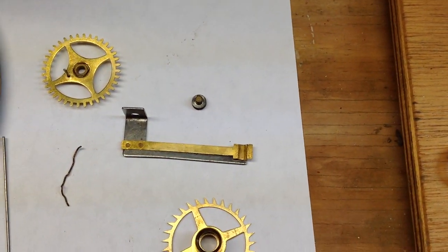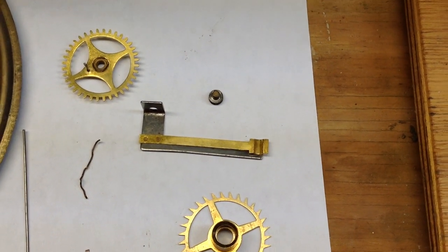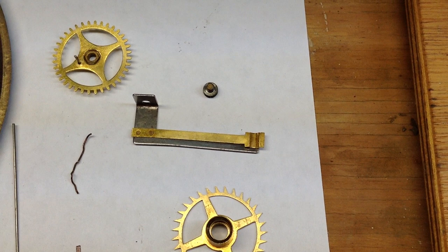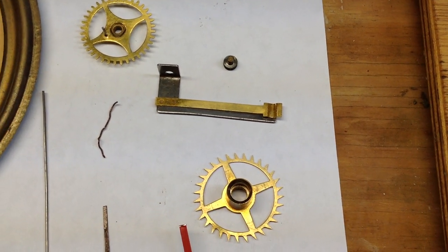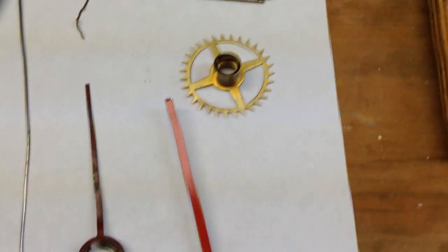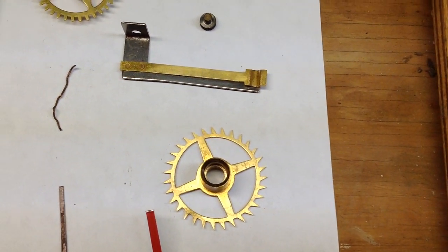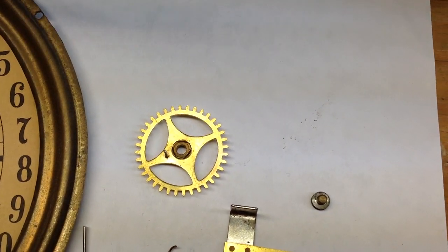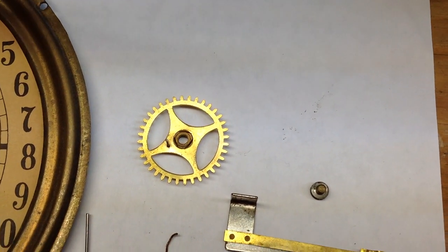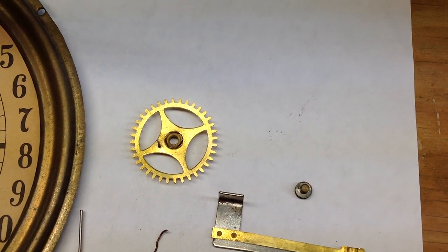And this little device here screws onto the front plate. This little ridge off to the right there nestles in between the teeth of the calendar wheel. The calendar hand fits onto the center of this. And then this wheel here is what drives the calendar wheel. You can see that it has a pin on it.